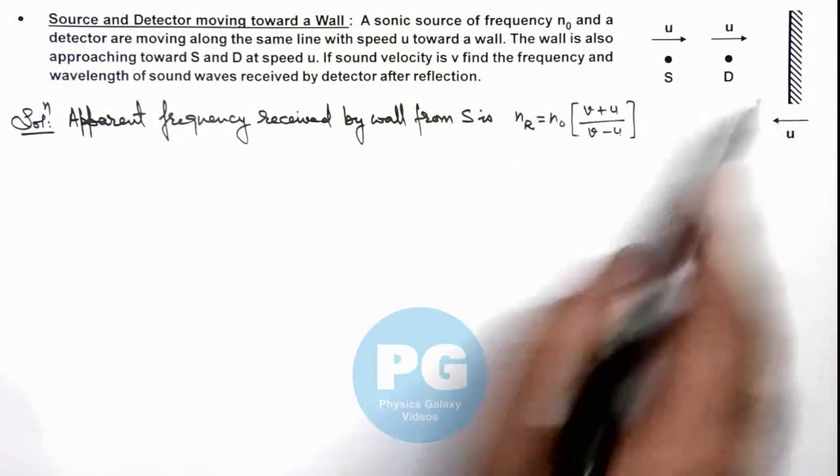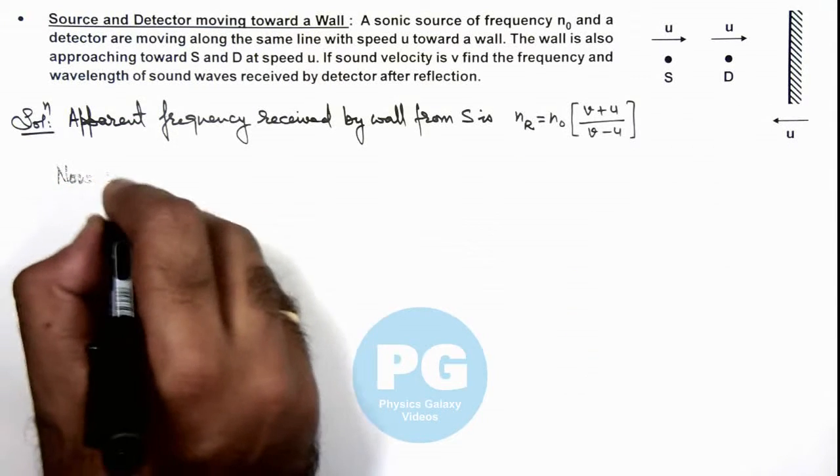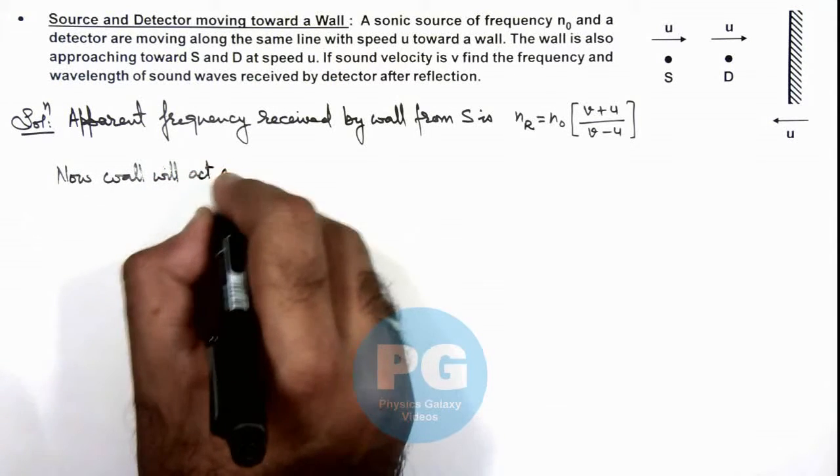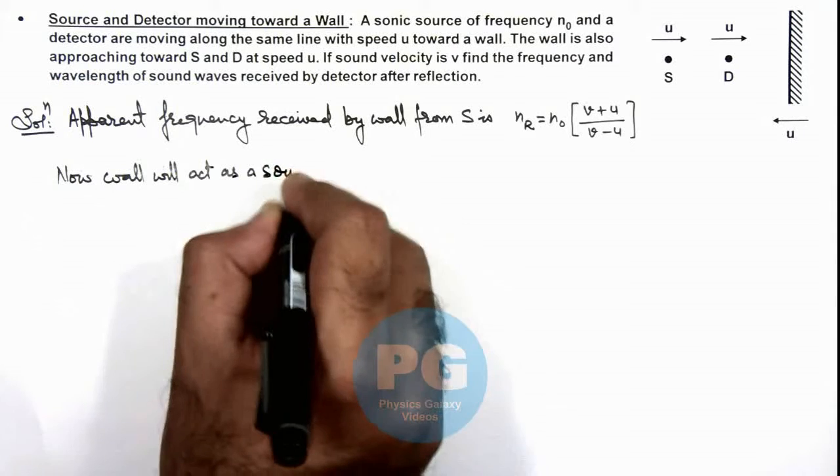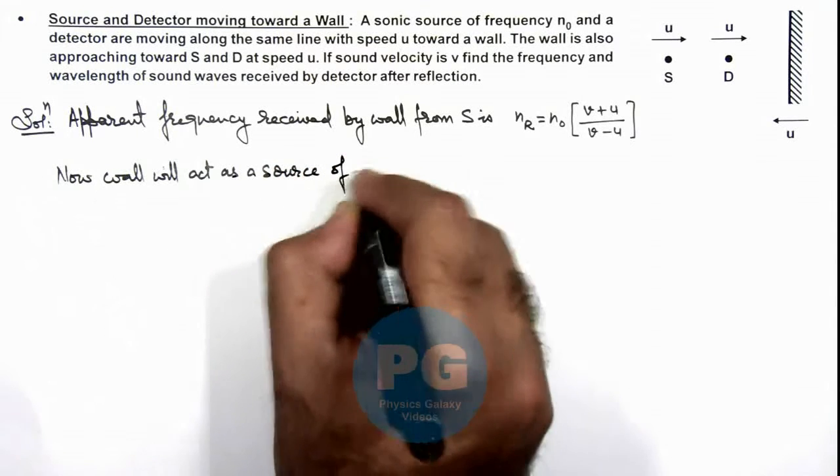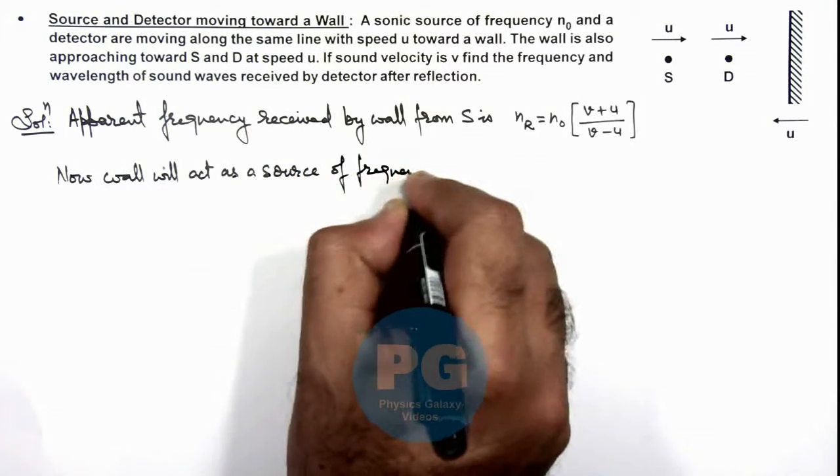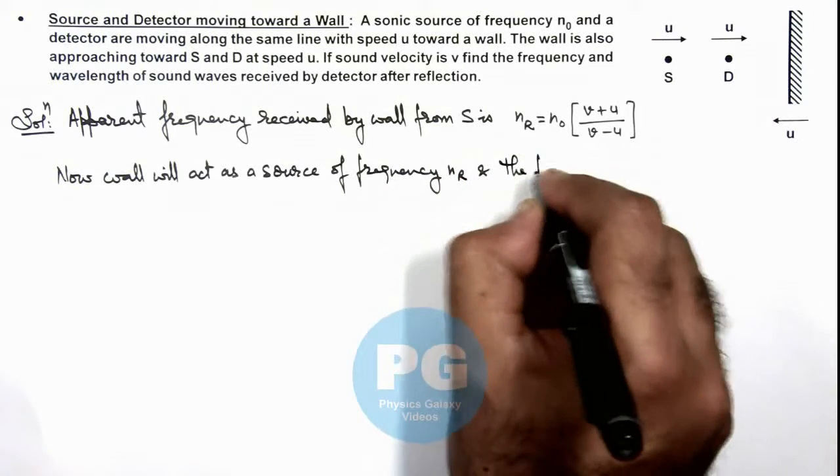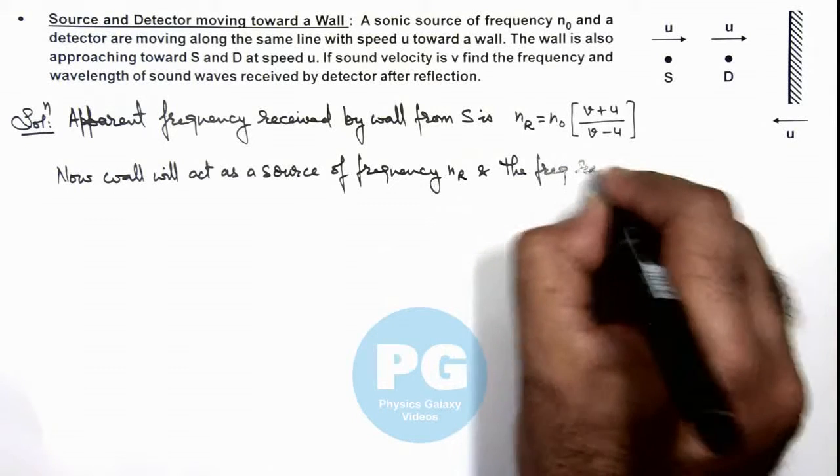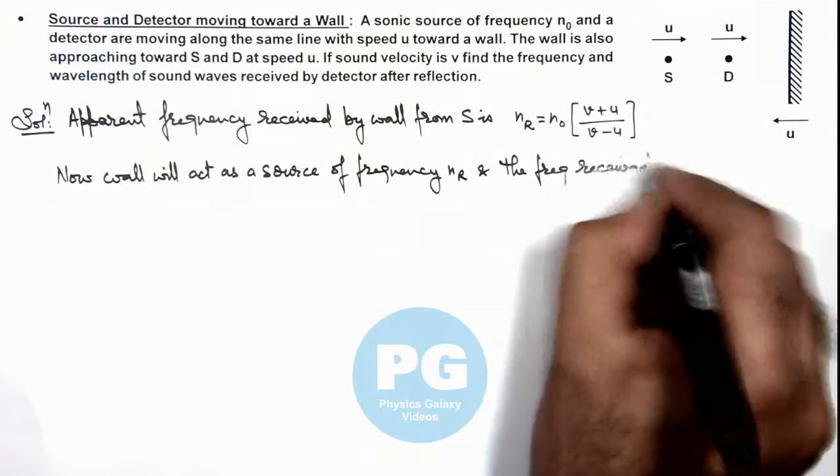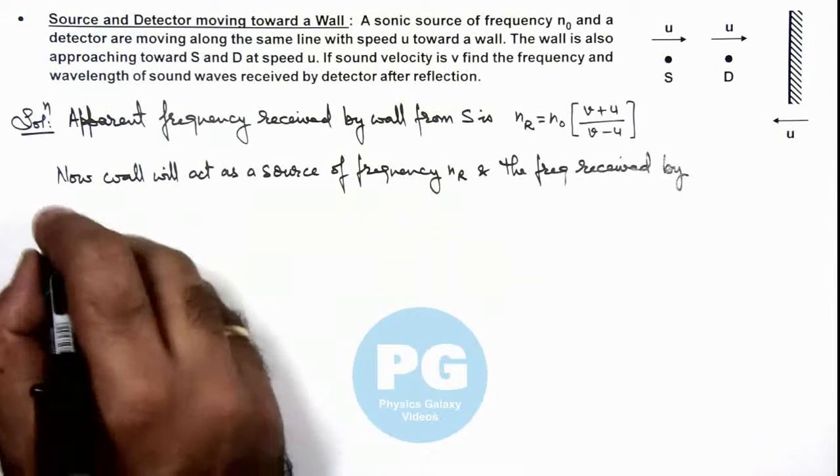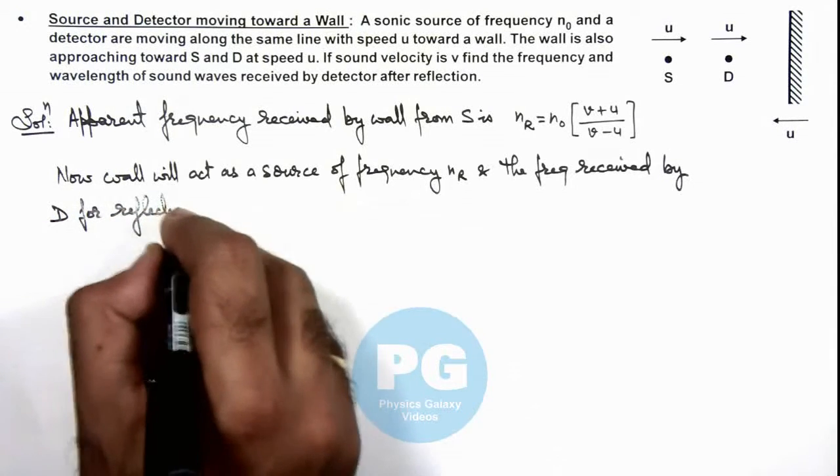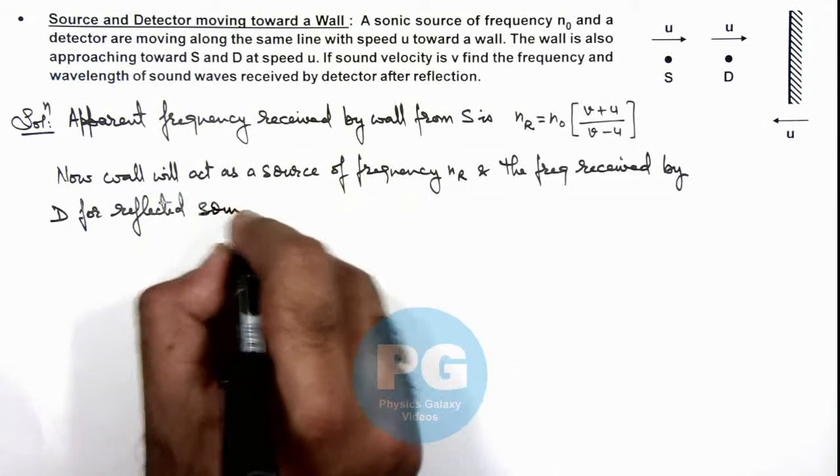And now we can say, now wall will act as a source of frequency nᵣ. And the frequency received by detector for reflected sound is...